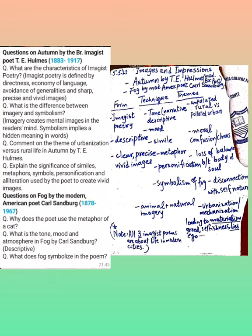His poem is titled Autumn, and he says: 'A touch of cold in the autumn night, I walked abroad and saw the ruddy moon lean over a hedge like a red-faced farmer. I did not stop to speak, but nodded, and round about were the wistful stars with white faces like town children.' That's the poem, Autumn.